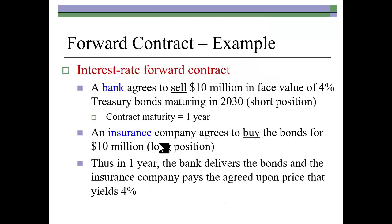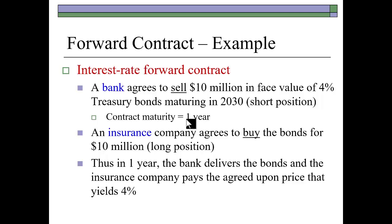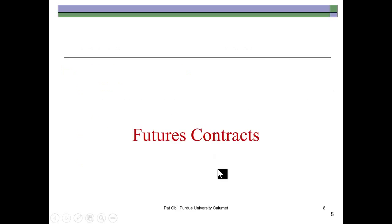Here is a basic example of an interest rate forward contract between a bank and an insurance company. The bank agrees to sell a $10 million face value Treasury bond to yield 4%, with maturity in 2030. Since the bank is selling bond forward contracts, this is a short position, and the contract maturity is one year. The insurance company, which holds the long position, will pay $10 million. Payment and delivery take place one year from today, at a yield to maturity of 4%.